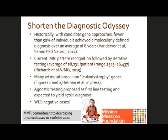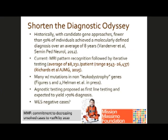This distinction becomes very important when we start to think about how to approach diagnosis in leukodystrophies. Historically, as recently as about a decade ago, when we were looking at patients who had white matter abnormalities on an MRI, we used candidate gene approaches — sequencing and/or biochemical testing. That approach of sequential MRI pattern recognition and clinical features followed by iterative testing resulted in a diagnosis in only approximately half of affected patients, with high average cost and long average time.